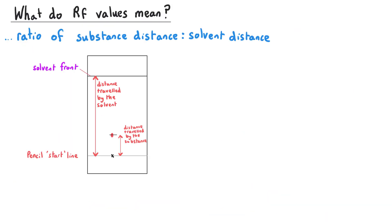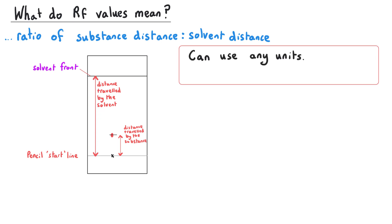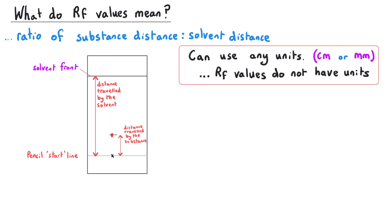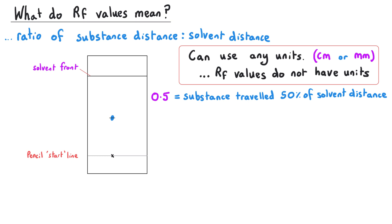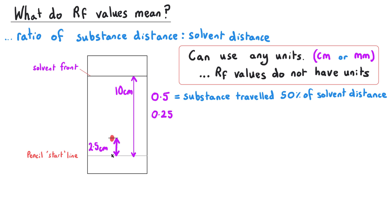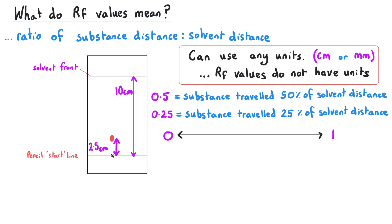Since the RF value is a ratio of distances, we can use any units — most typically centimetres or millimetres — but the RF value itself will not have any units. It can be useful to think of the RF value as a decimalised percentage of the way up the solvent that the sample has travelled. A value of 0.5 means the substance has travelled 50% of the way compared to the solvent; 0.25 means it has travelled only 25% of the solvent's distance. The RF value can be any number between 0 and 1.